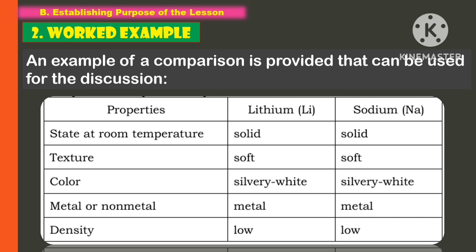An example comparison is provided for discussion. We have two elements: lithium and sodium. When it comes to state at room temperature, lithium is solid and sodium is also solid. When it comes to texture, lithium is soft while sodium is also soft. For color, lithium is silvery-white while sodium is also silvery-white. Both are metals, and both have low density.